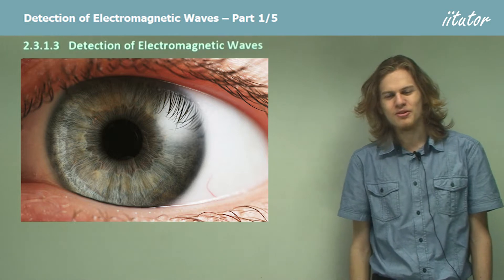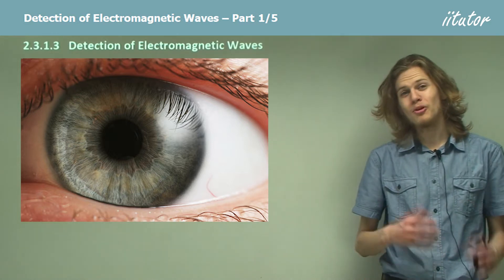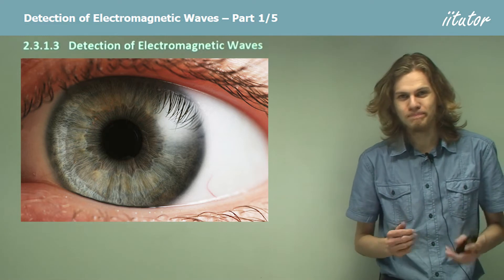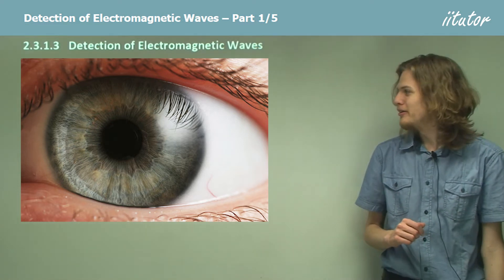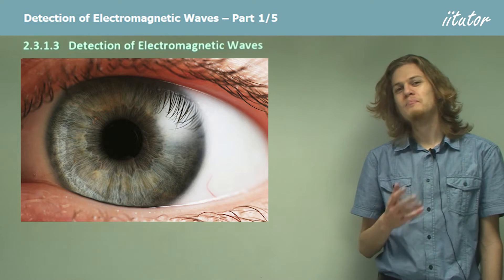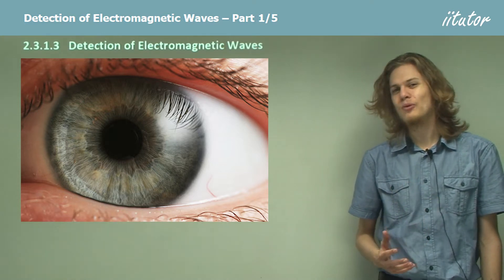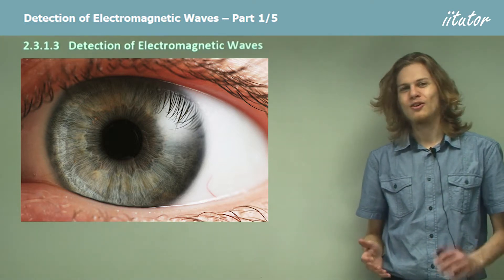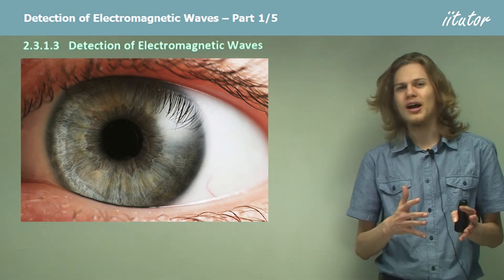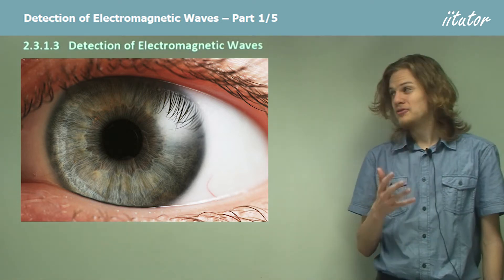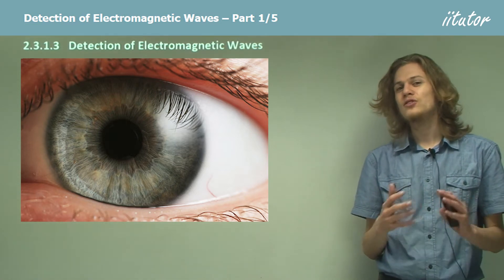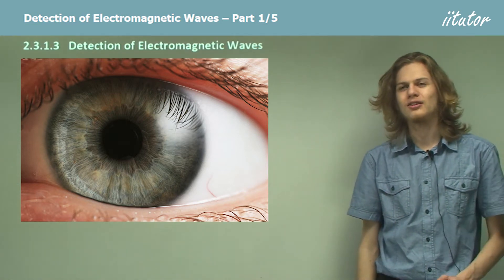Hi everyone. Today we're going to be talking a bit more about electromagnetic waves, this time about how we detect them. We can see over here a picture of a human eye, which is probably the most familiar way to detect electromagnetic waves, except of course it can only detect them if they're in the visible light part of the spectrum. In the rest of this slide we're going to look at ways of detecting invisible pieces of electromagnetic radiation.